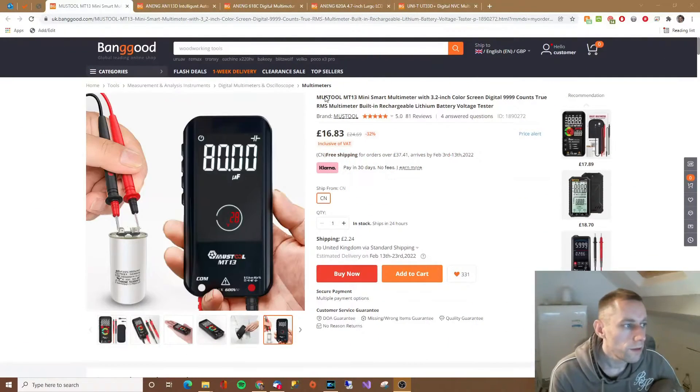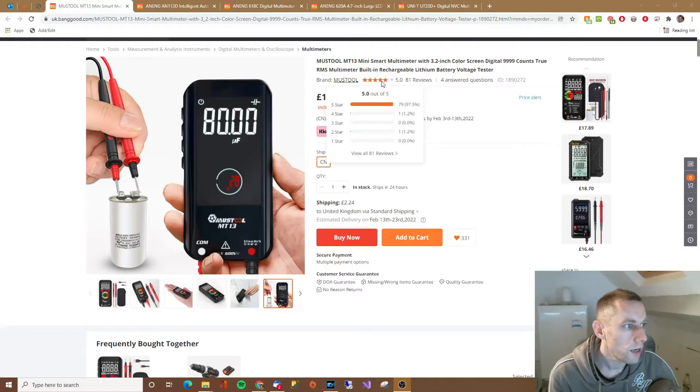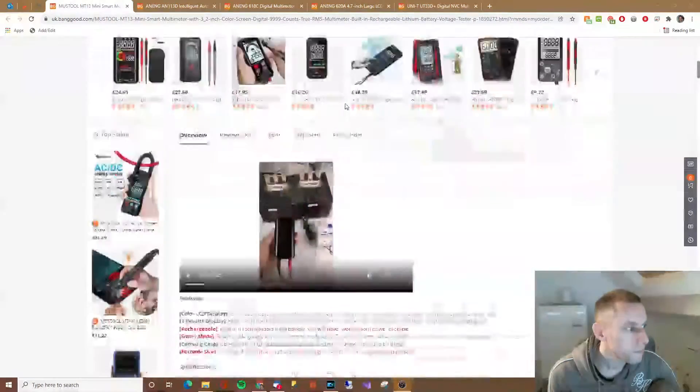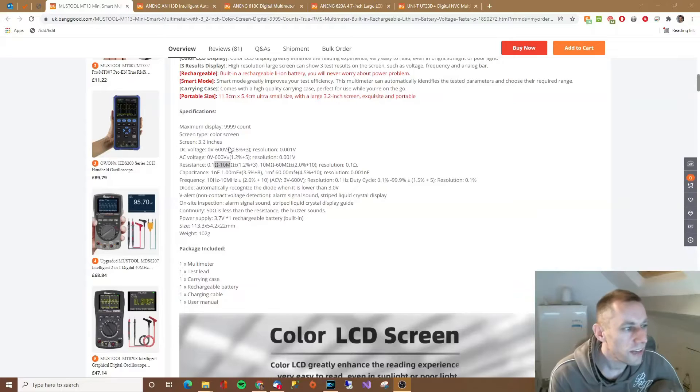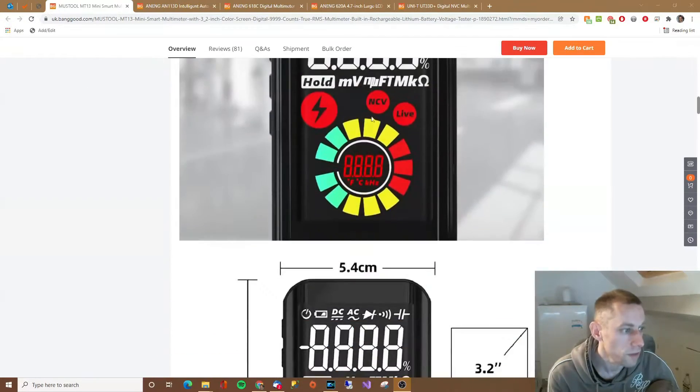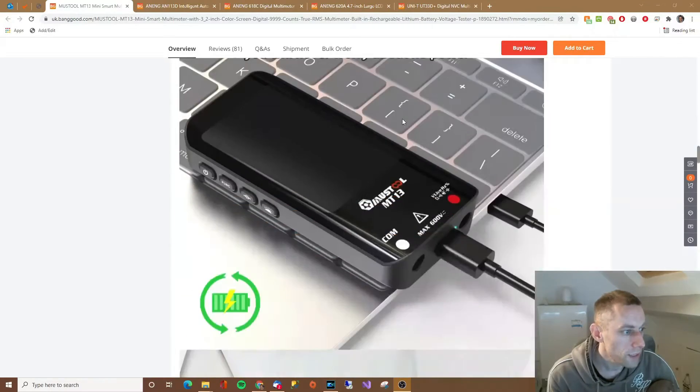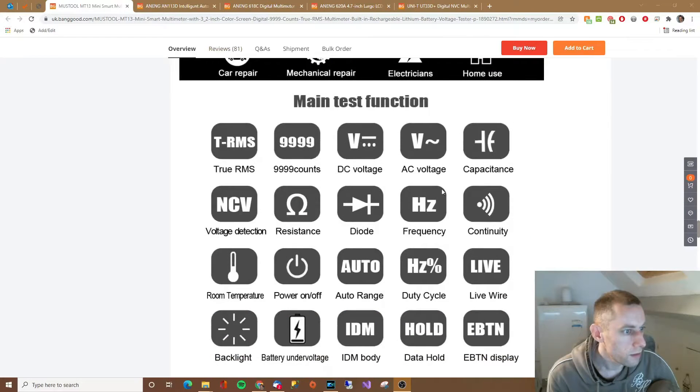OK, so this is the first one. Mustool MT13 mini smart multimeter. It's actually got a 5 out of 5 rating. There's the price. These are the details, which to be honest I don't really care about the exact details because it will become more obvious when I come to test it whether it's going to work or not. But there's the first one. That's what it can do.